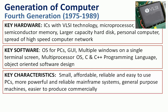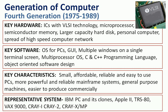The characteristics are small, affordable, reliable, and easy to use personal computers, more powerful and reliable mainframe systems, general purpose machines, easier to produce commercially. The representative systems are IBM PC and its clones, Apple II, TRS-80, VEX-9000, Cray-1, Cray-2, and Cray X-MP.